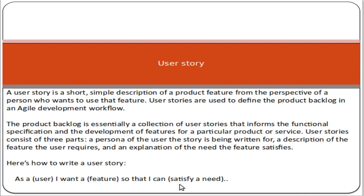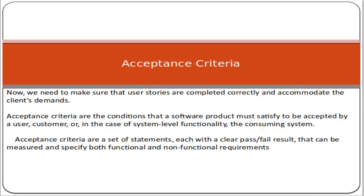The other important thing is acceptance criteria. Whenever we are writing a user story we must also define the acceptance criteria. Acceptance criteria defines on what basis we shall say that the requirement of the customer has been fulfilled. When a user story has been completed, we use the acceptance criteria to decide whether the user story has been successfully delivered to the customer. Acceptance criteria are the conditions that a software product must satisfy to be accepted by a user, customer, or in the case of system-level functionality, the consuming system.